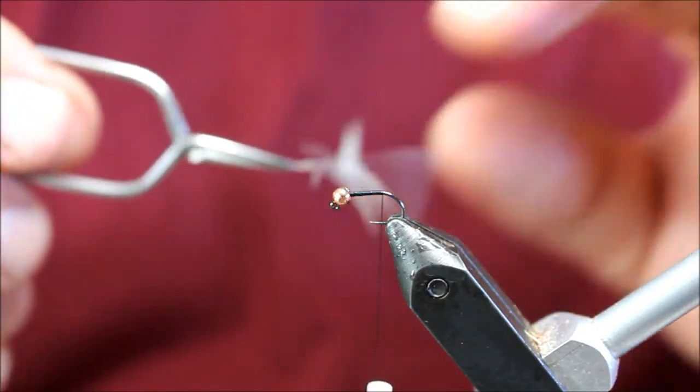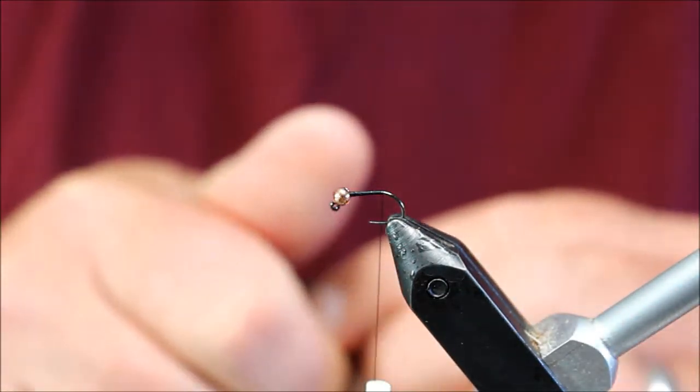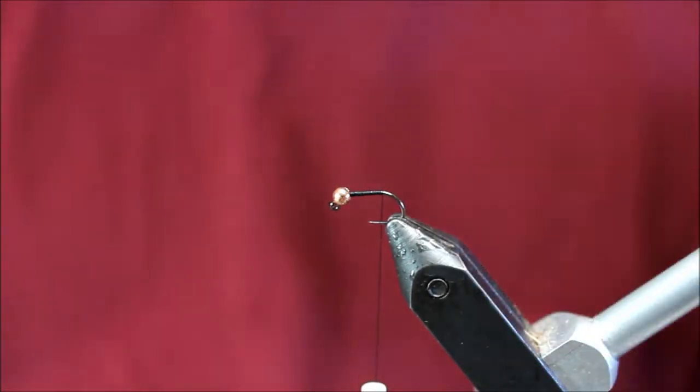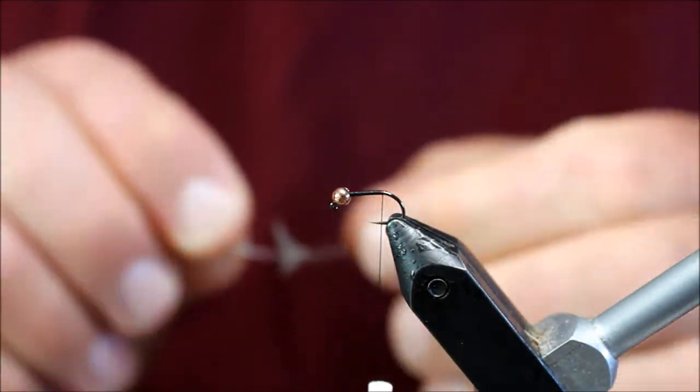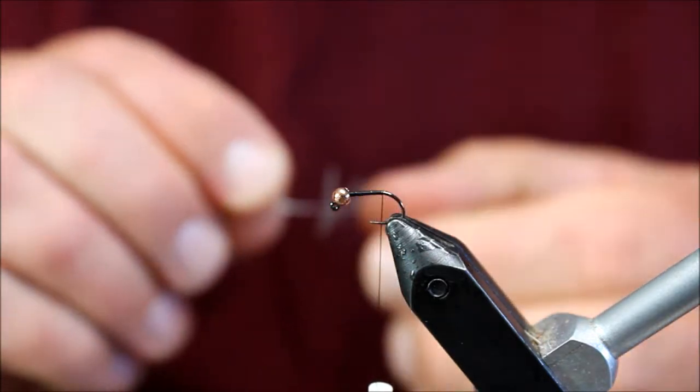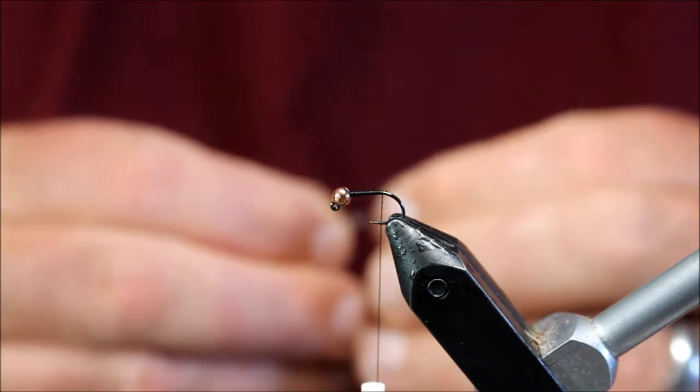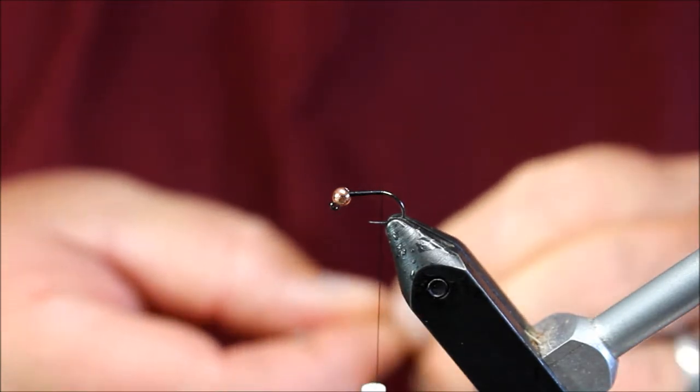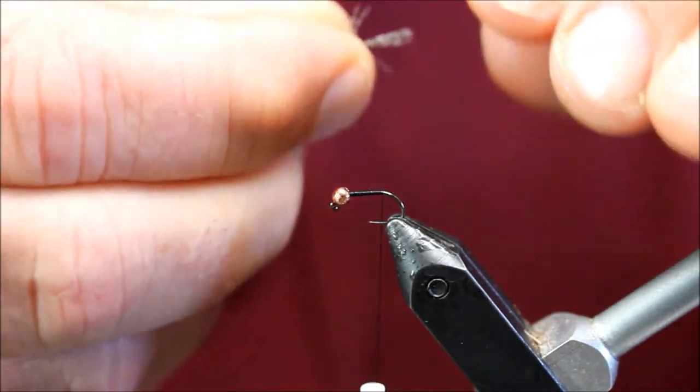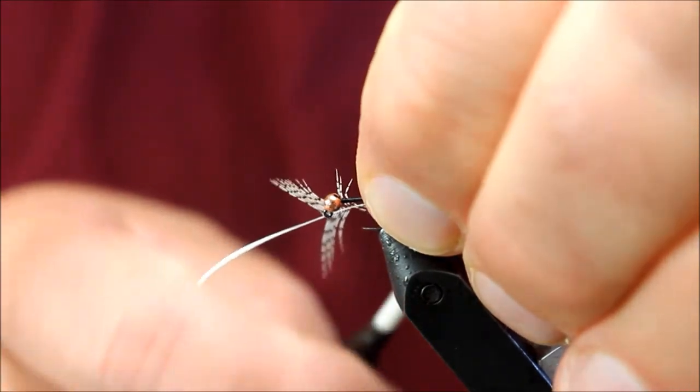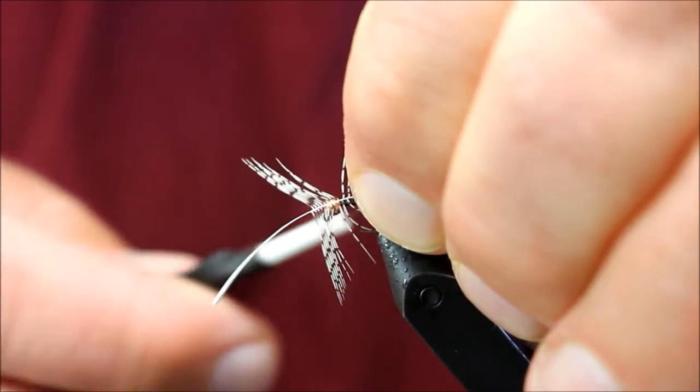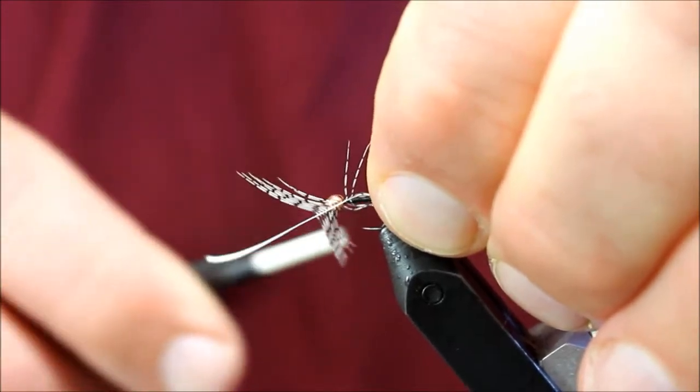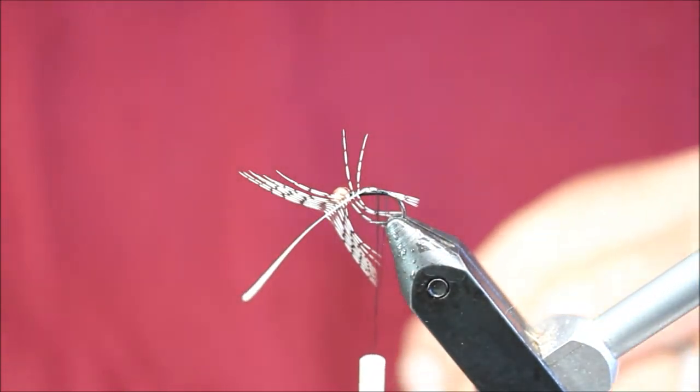Traditionally we'd be tying this in at the end of the fly up front in that direction, but we're going to do things kind of backwards here. What I'm gonna do is I'm actually going to tie it in with the stem pointing towards the bead and come in the opposite direction.